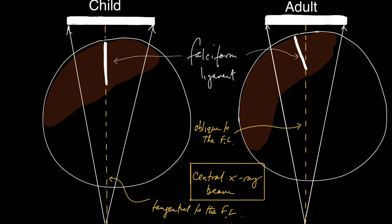The falciform ligament will only be seen if the x-ray beam is tangential to it. In adults, where the liver is relatively small compared to the rest of the abdomen — compared to a child —